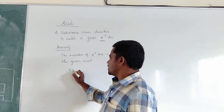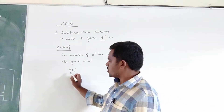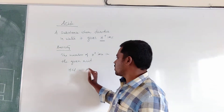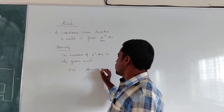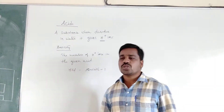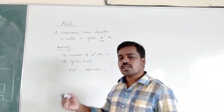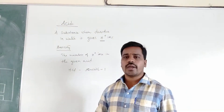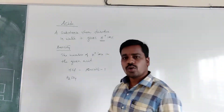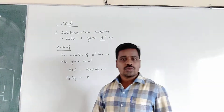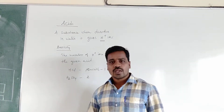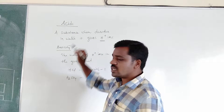For example, if we take HCl, it is an acid. How many H plus ions are there in it? One. So the basicity of HCl is equal to one. For H2SO4, how many hydrogens are present? Two hydrogens. So the basicity of H2SO4 is two. The basicity depends upon the number of H plus ions present in the given acid.